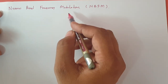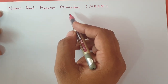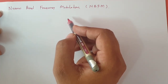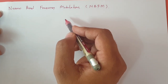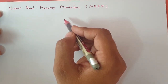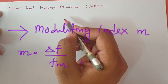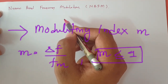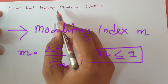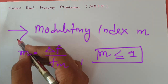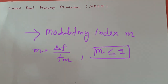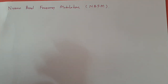We are using narrow band frequency modulation in voice communication and radio settings. When we talk about frequency modulation, the modulating index — that is the deviation in frequency divided by modulating frequency — should be less than 1 in case of narrow band frequency modulation. These are the basics that we need to keep in mind.